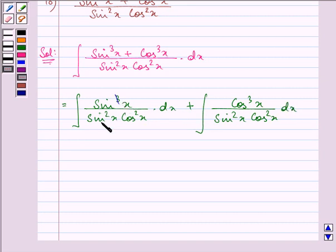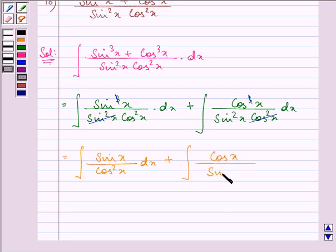On simplifying it, we are left with sine x over cos square x dx plus cos x over sine square x dx.